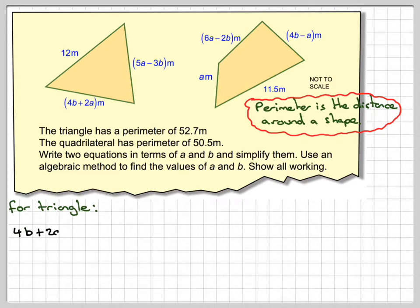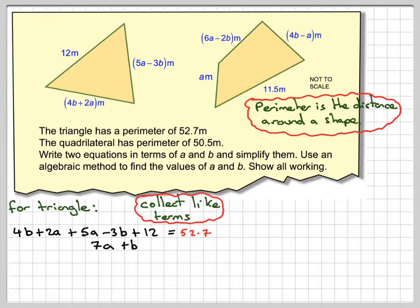For the triangle, we have 4B + 2A + 5A - 3B + 12 = 52.7. Collecting like terms: 2A and 5A gives 7A, 4B minus 3B gives B, plus 12 equals 52.7. Subtracting 12 from both sides gives 7A + B = 40.7.